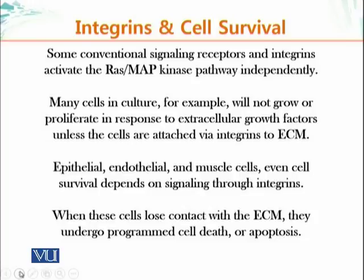Endothelial and muscle cells greatly depend on integrin signaling for survival. When these cells become loose or lose contact with the ECM — they come off the tissue — they undergo programmed cell death, or apoptosis. Blood is full of growth factors, but the effect of all those signaling molecules becomes zero unless these cells are attached to the ECM via integrin molecules.